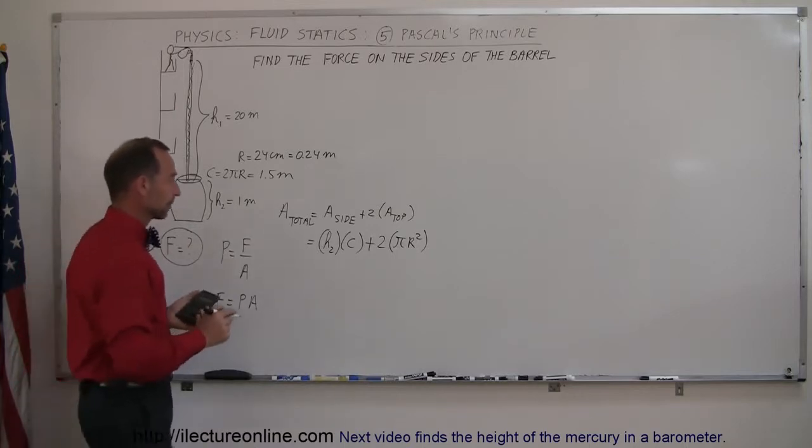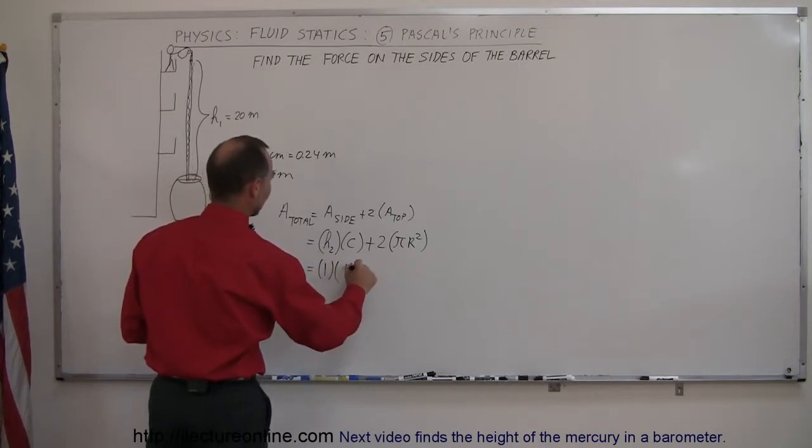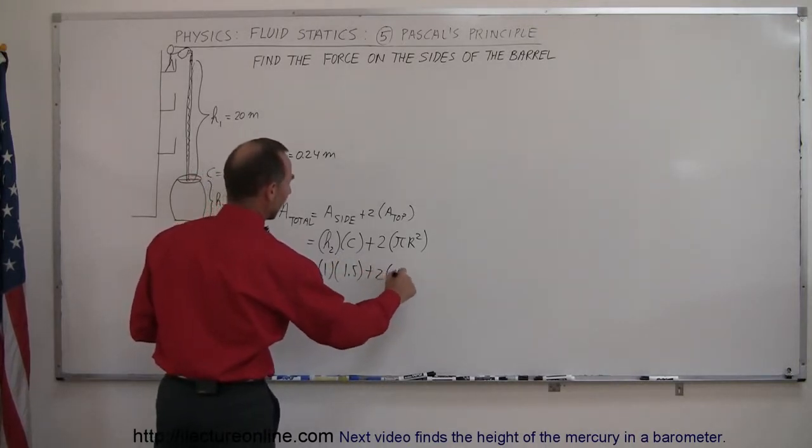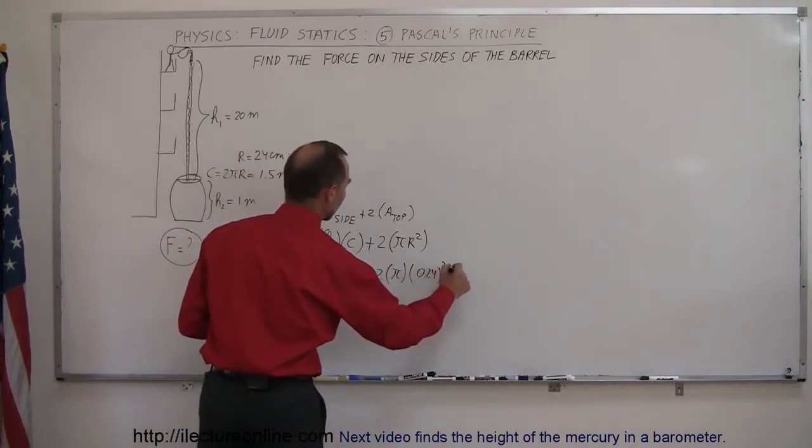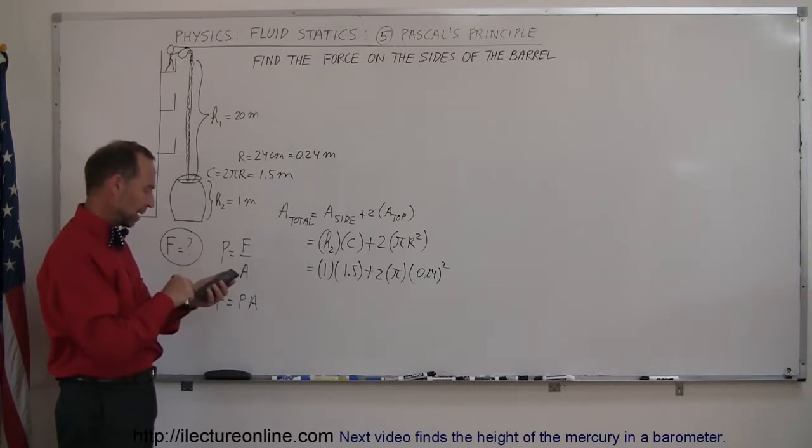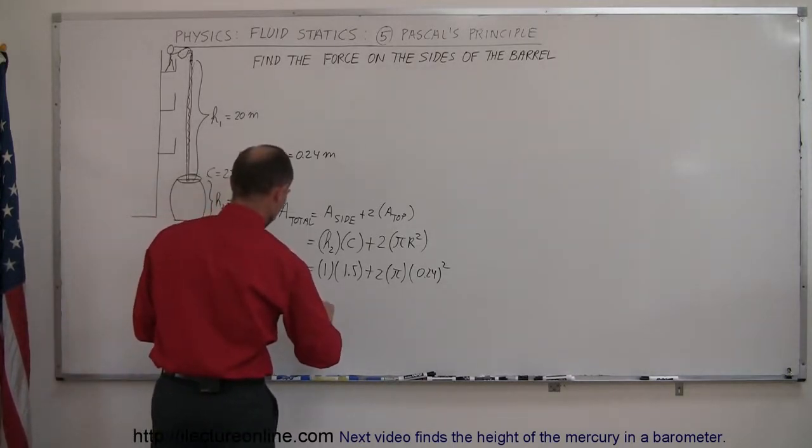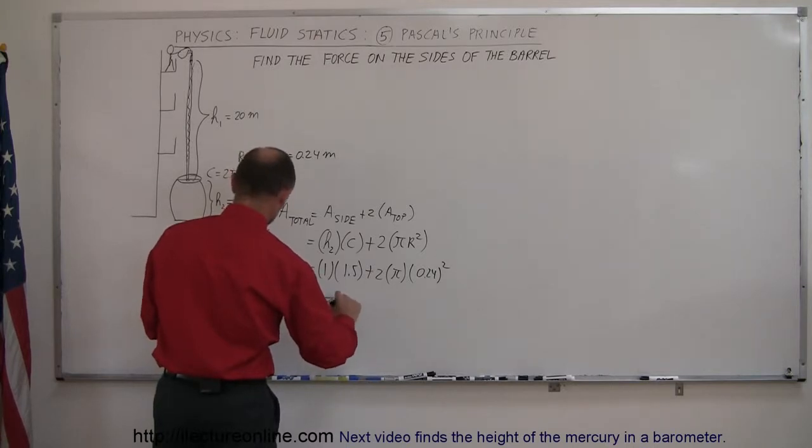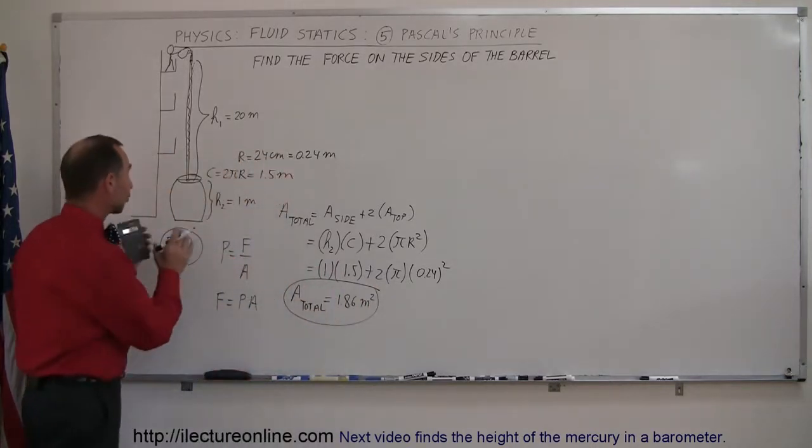Now we have everything we need to find the surface area of this barrel. That would be equal to 1 times C, and C is 1.5 meters, plus 2 times π times the radius squared, which is 0.24 squared. So the total surface area is equal to 1.86 meters squared.